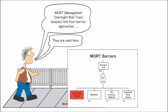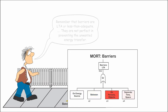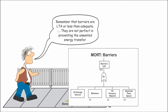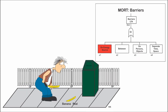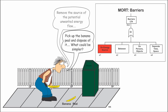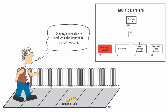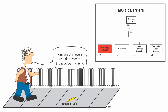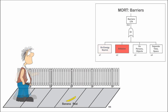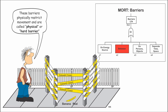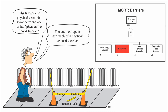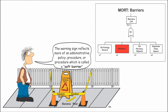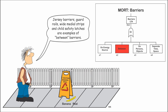Barriers can be placed on the source of the energy flow to eliminate or reduce the amount of the energy flow. The banana peel is removed. For drivers, speed limits potentially reduce the amount of energy transfer in a crash. Removing the chemicals from below the sink or using non-toxic chemicals focuses on reducing the energy source when childproofing. Barriers can also be placed between the source and the target. Closing the sidewalk with physical barriers works. Jersey barriers, guardrails, and wide median strips help to prevent head-on car crashes.